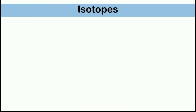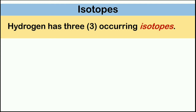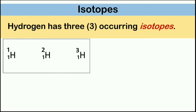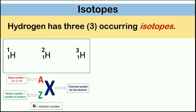Let's jump into isotopes. What are isotopes? In order for us to know what isotopes are, let's have an example. Hydrogen has 3 naturally occurring isotopes. These are the nuclear symbol notations for hydrogen isotopes, and let's use this as a guide to define what an isotope is.